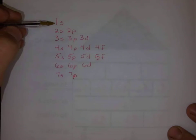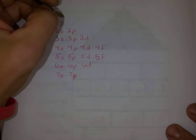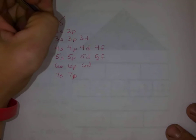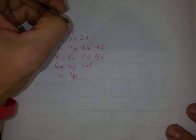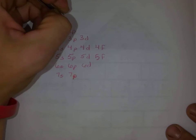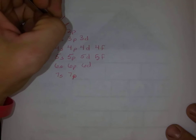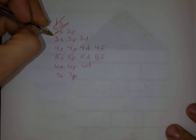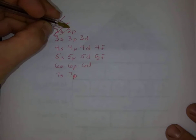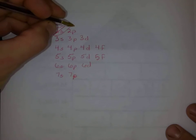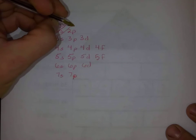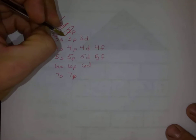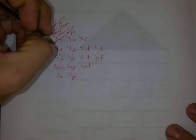So our 1s is what's going to fill first — we're going to draw an arrow through that. Then we're going to make a loop and go back over here. Next, we're going to fill up the 2s. And then we're going to make a loop and go back up here, and then we're going to fill our 2p, and then our 3s.